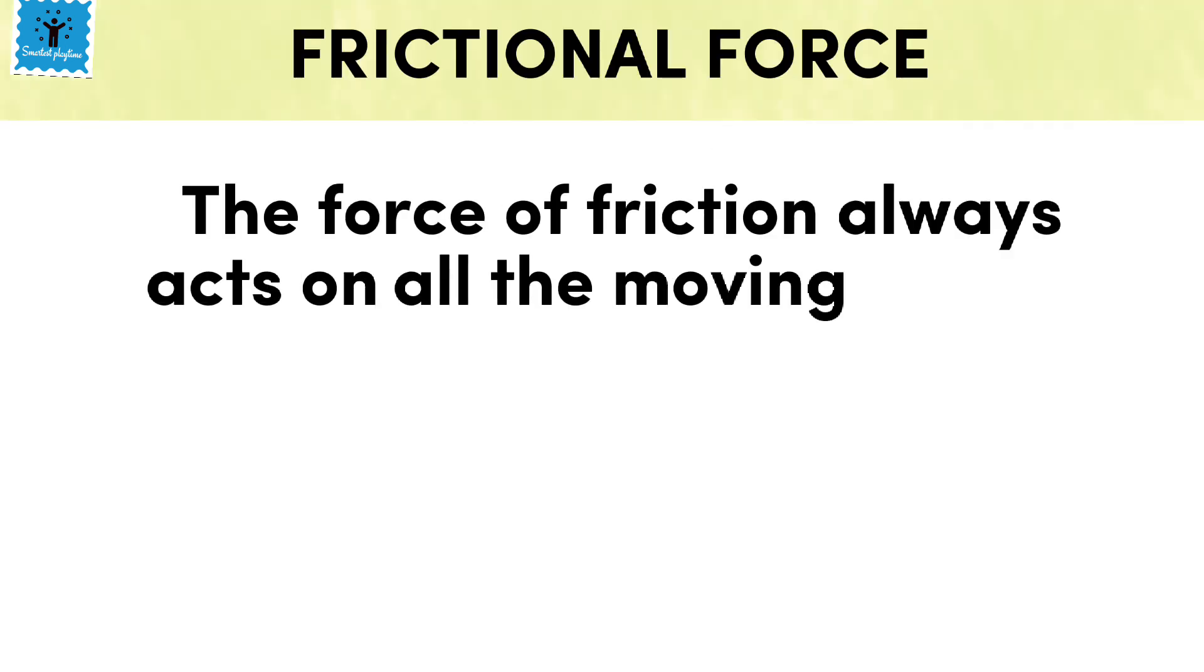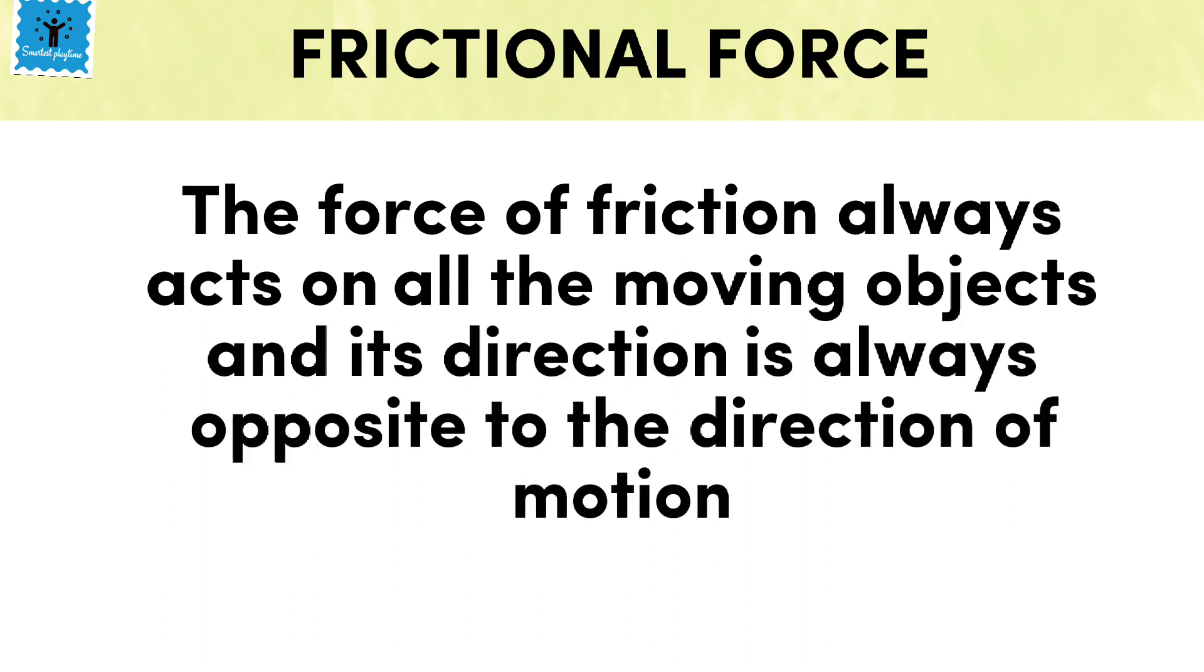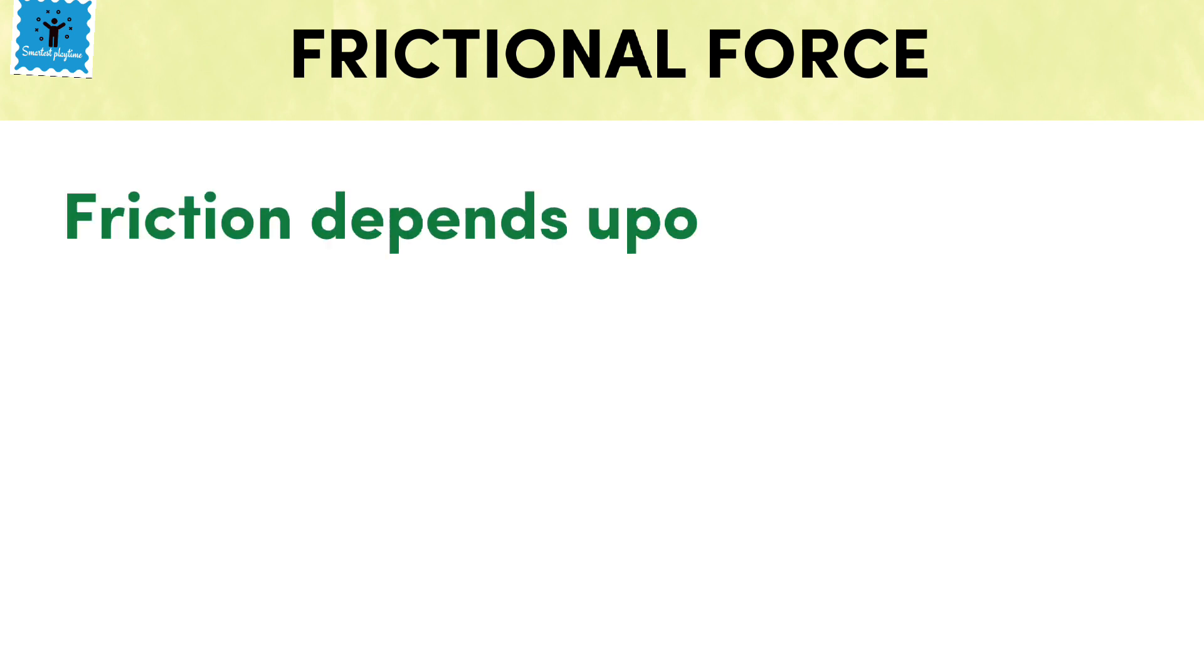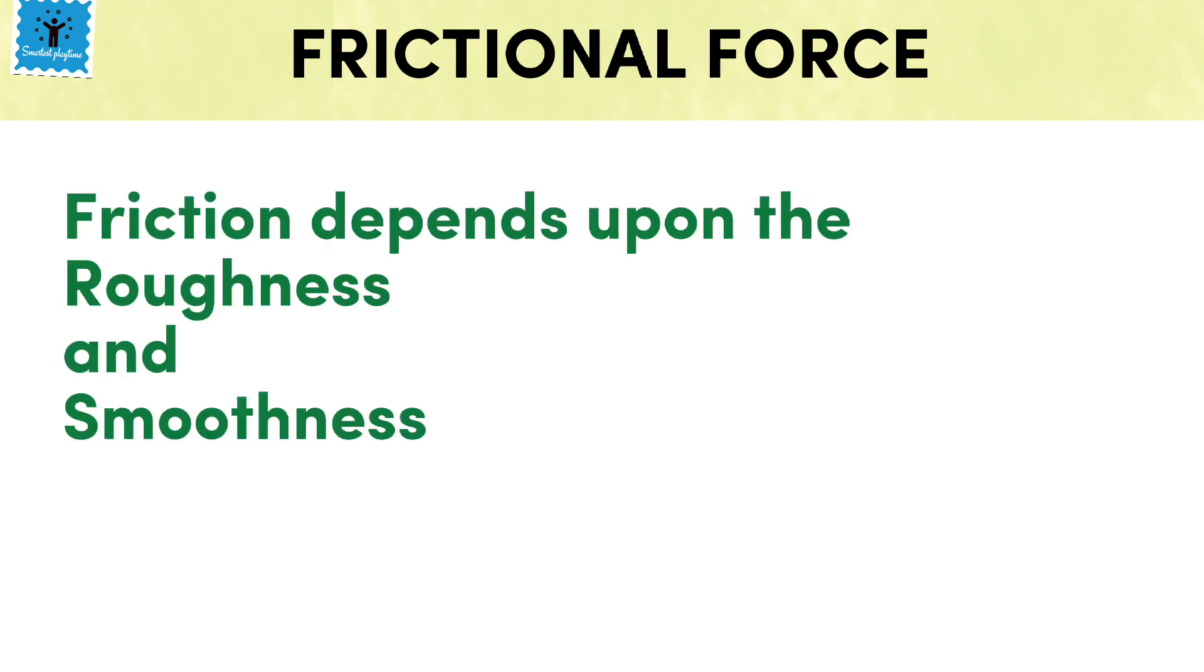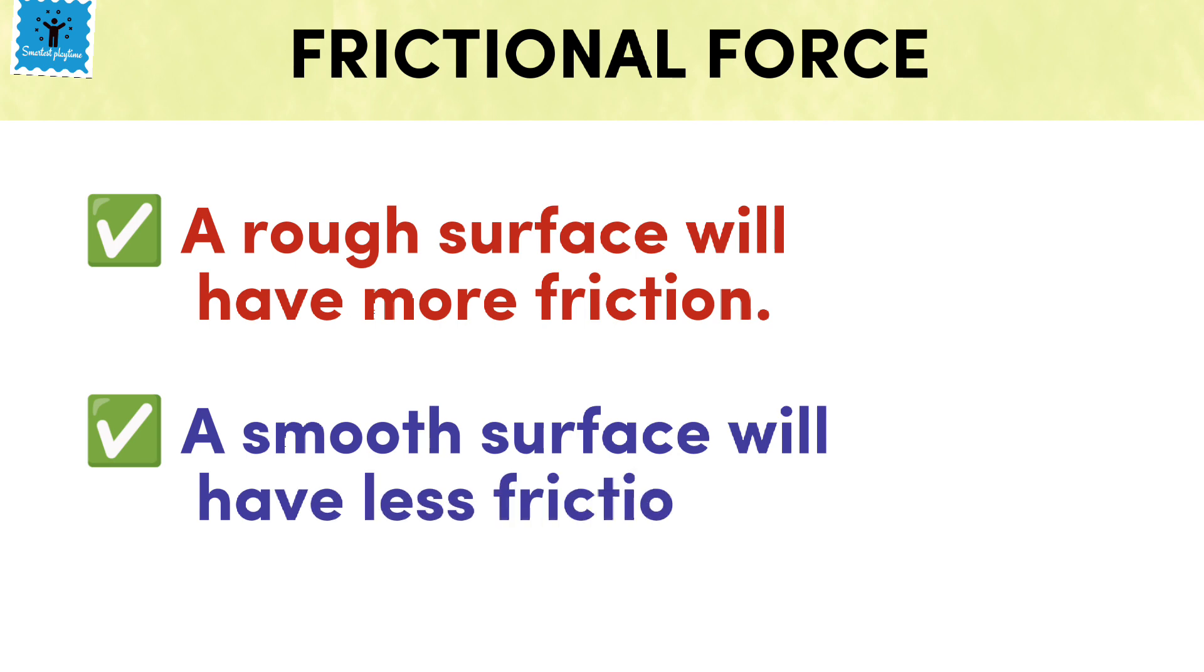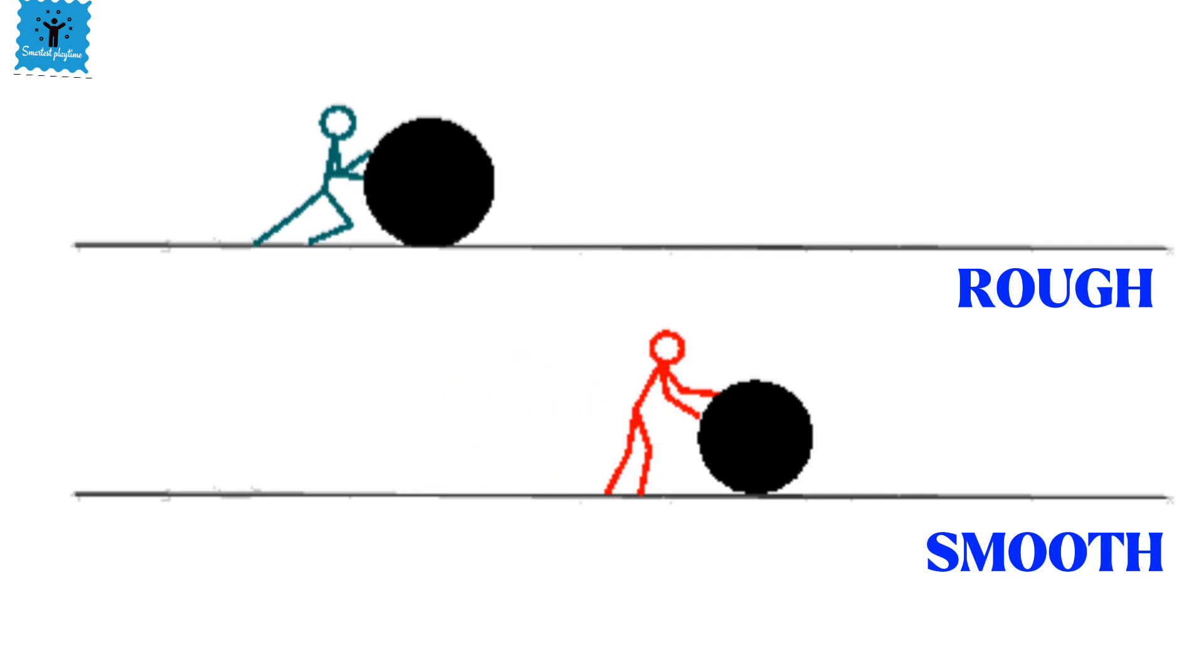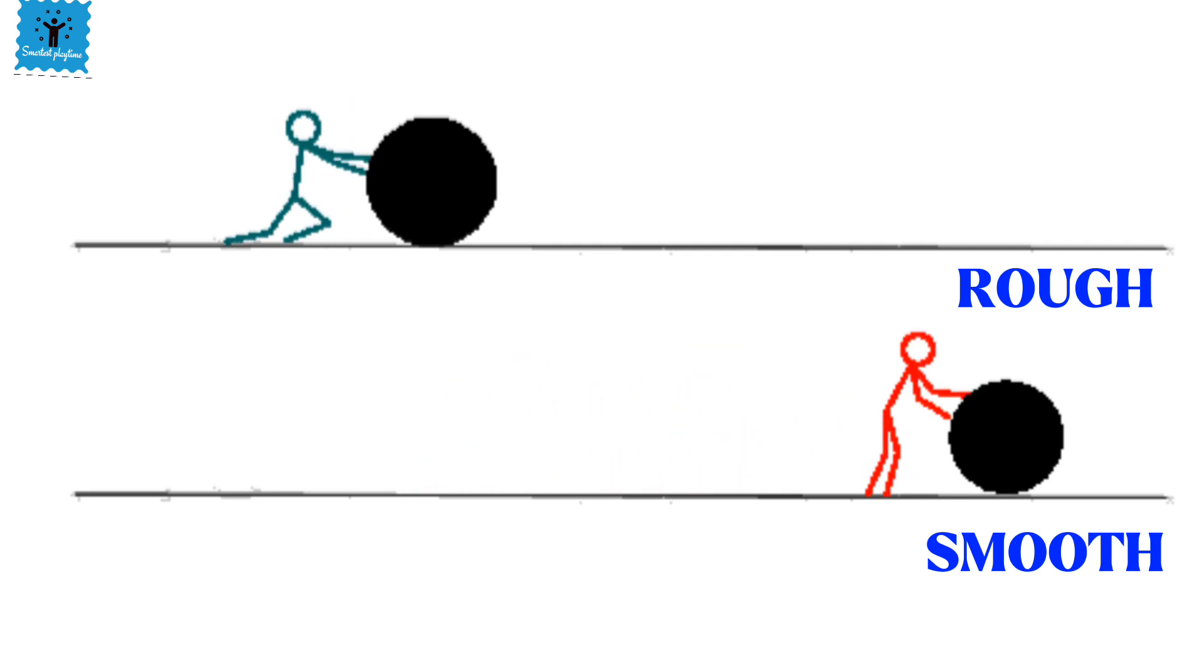We can say that friction is a force that opposes or resists the motion of an object that comes in contact or slides against each other. The friction depends upon the roughness and smoothness of the sliding object. The rougher the object, the more friction will be generated. The smoother the object, the more smoothly it can move. As we can see, a smooth ball with a smoother surface can travel a longer distance than a rough ball.